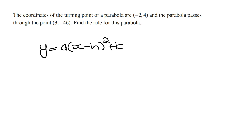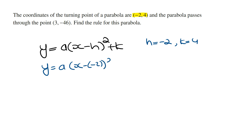We're told that the turning point has the coordinates minus two and four, and so this means that the value of h is equal to minus two and the value of k is equal to four. Subbing this into the general rule, we're going to get y is equal to a times x minus and then minus two, all squared, and then plus four. Cleaning this up, this is going to be a times x plus two, all squared, plus four.